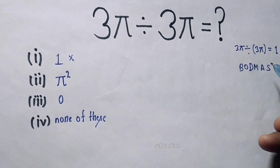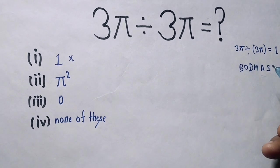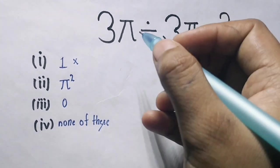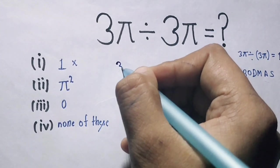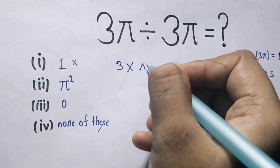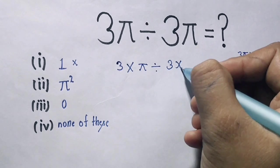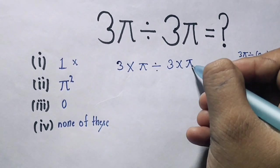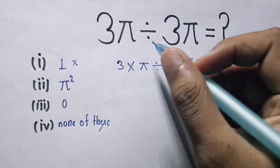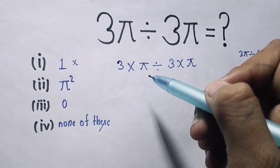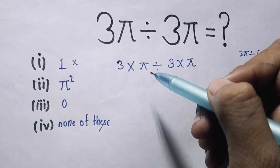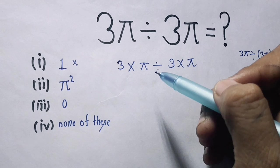This is the BODMAS rule. 3π we can write 3 times π divided by 3 multiply π. This equation has two operations, multiplication and division, so we are applying the BODMAS rule.